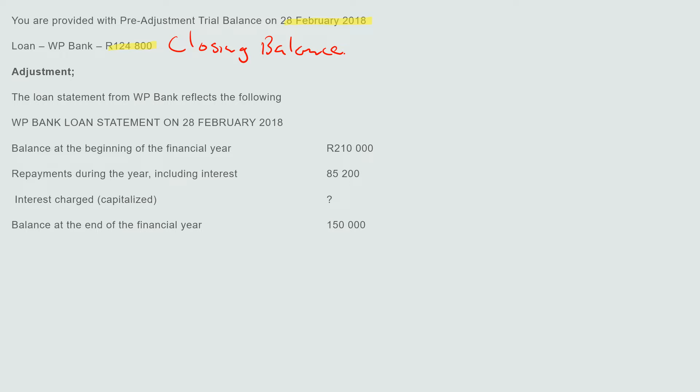WP Bank loan statement on 28 February 2018 — that is the same date. Balance at the beginning: $210,000. Repayments during the year including interest: $85,200. Interest charged or capitalized: nothing. Then balance at the end.